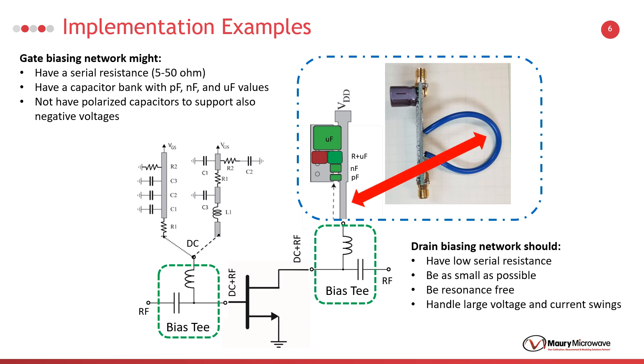Here, we can see one of our own small circuit designs. It has several capacitors in the picofarad, nanofarad, and microfarad values. There is also a serial RC network to avoid resonances. This additional network provides a reduced impedance in the low frequency range for the drain biasing.